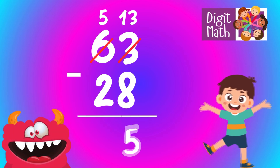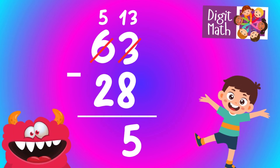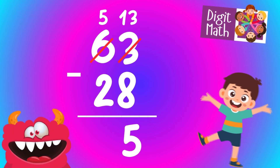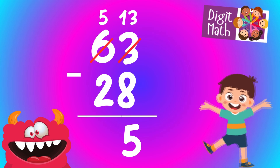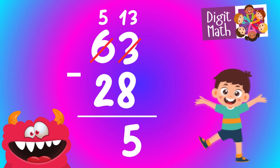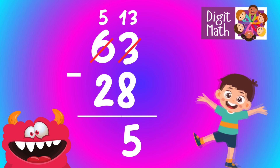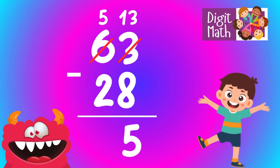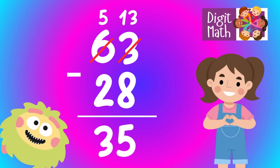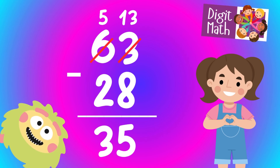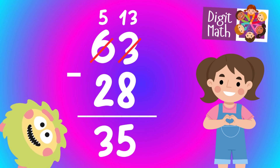In the tens column, we now have 5. Subtract 2 from 5, which equals 3. So the final result is 63 minus 28 equals 35.